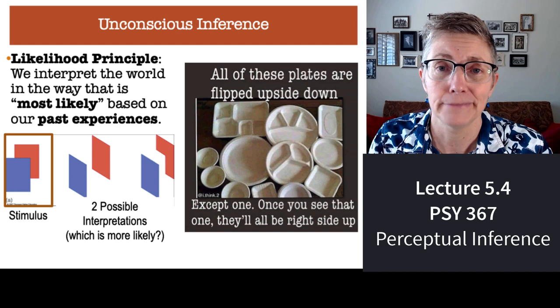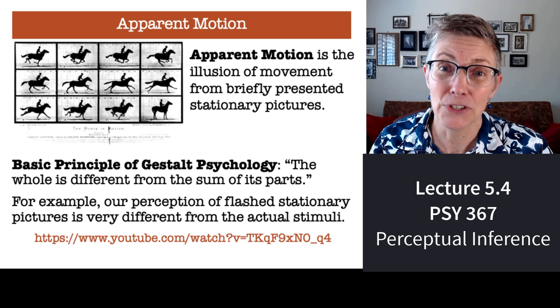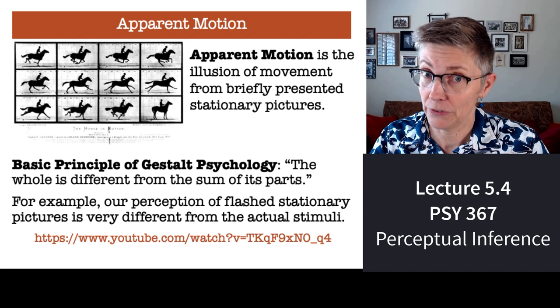Another example of the need for top-down information, or unconscious inference to use a Helmholtzian phrase, is something called apparent motion.